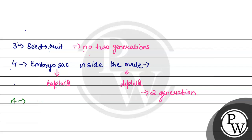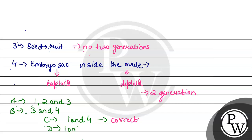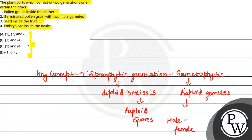Option A says first, second, and third are correct — this is not true because only first and fourth are correct. Option B gives three and four — also incorrect since option three does not show two generations. Option C gives one and four — this is correct because both options show two generations. Option D gives only one — incorrect because option four also has two generations present. Therefore, the correct answer is option C: one and four.